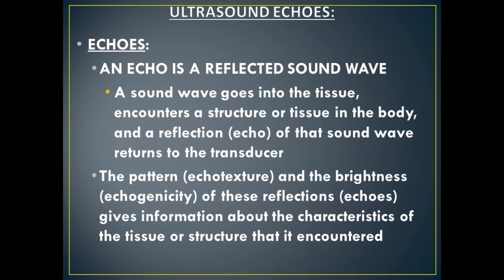Echoes are really important in ultrasound — this is what all of ultrasound is based on. An echo is a reflected sound wave. The transducer, which is the ultrasound probe, sends a sound wave into the body, that sound wave hits a structure, and a reflection is sent back up to the transducer. This reflection is what we call an echo. The transducer sends multiple sound waves into the tissues at once and gets multiple echoes back.